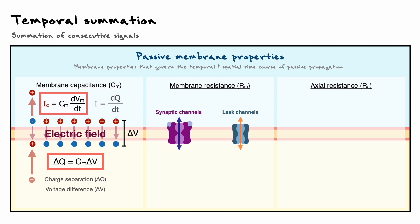As we've discussed in the equivalent circuit model video, ion channels obey Ohm's law and thus, the current that flows through them is equal to the voltage difference divided by the membrane resistance.